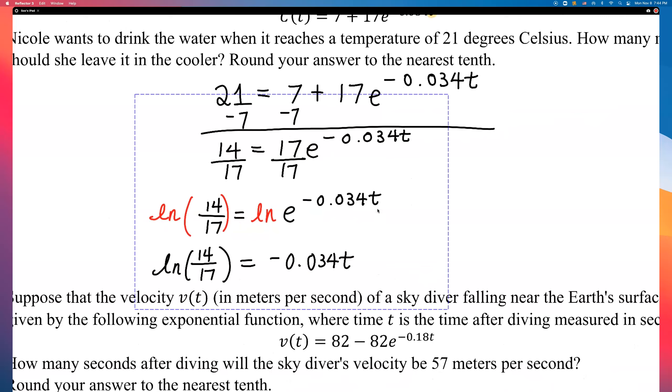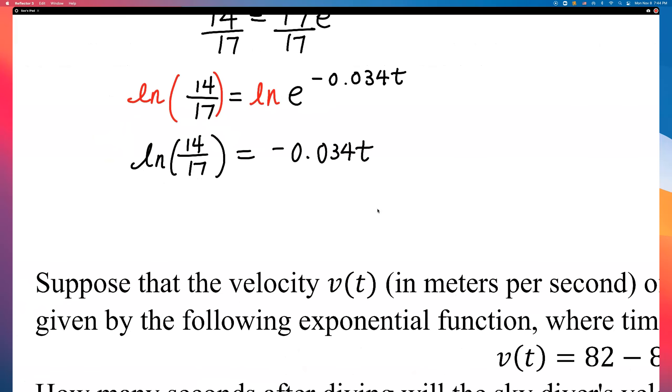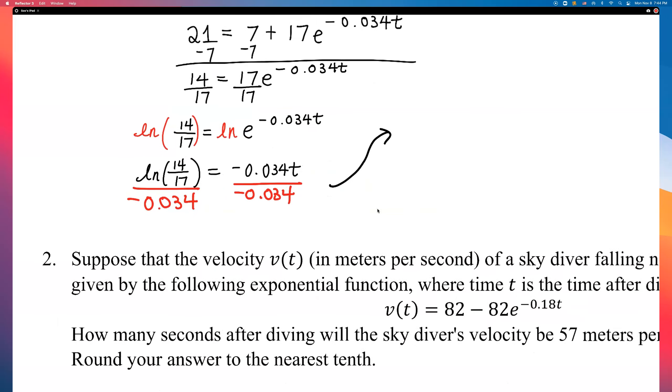Okay. Let me see if I can move the work to the side a little bit. Well, I'll just put it under here. Divide both sides by negative 0.034. T is approximately... Okay. Now, we'll need to get a scientific calculator, right? So, let's go ahead and divide.